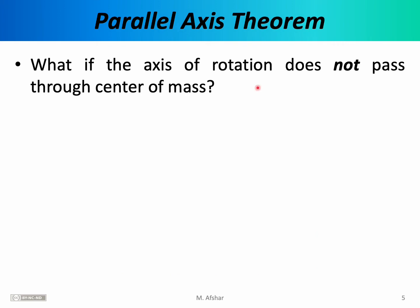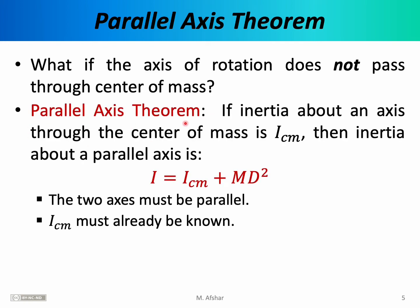In our last lecture I showed you a table that listed the moments of inertia for various important objects. You may have noticed that in that table, in almost all the cases, the objects were rotating about an axis that passed through the center of mass of the object. The question now is: what if the axis of rotation does not pass through the center of mass? What if the axis of rotation is displaced relative to the center of mass? This is a common case, and to handle it we use the parallel axis theorem.